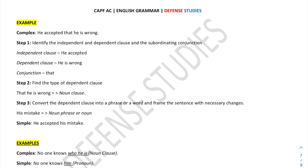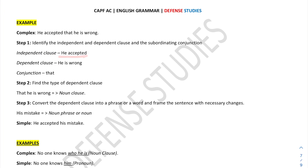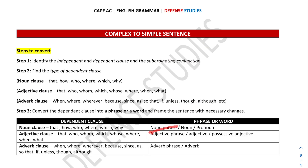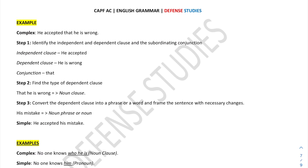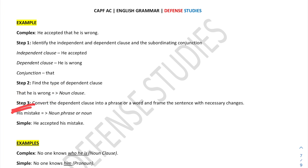Here is an example: 'He accepted that he is wrong' — this is a complex sentence. The first step is to identify the parts: the independent clause is 'he accepted', the dependent clause is 'he is wrong', and the conjunction is 'that'. Since 'that' is used, the dependent clause is a noun clause.